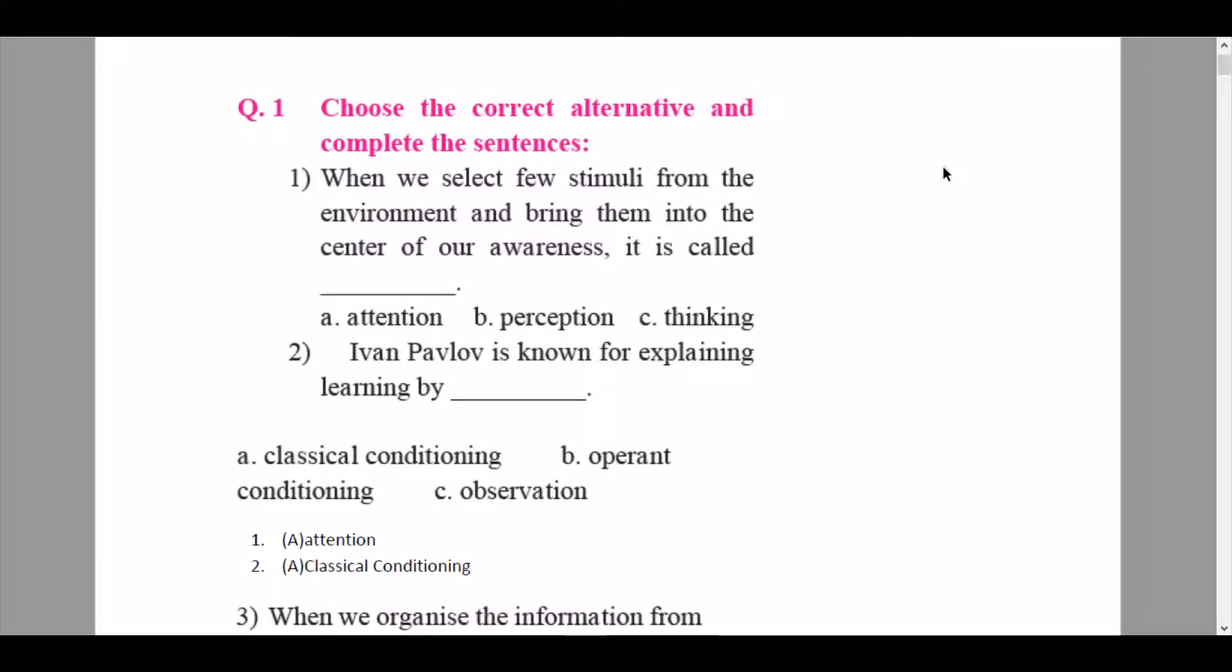So let's start. Question one: choose the correct alternative and complete the sentences. The first question here is when we select few stimuli from the environment and bring them into the center of our awareness it is called dash. So the answer here is option A, attention.